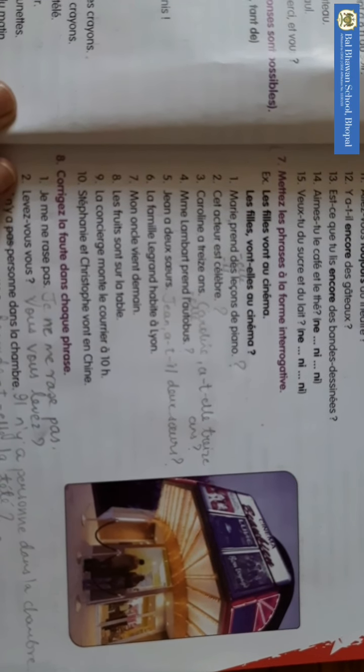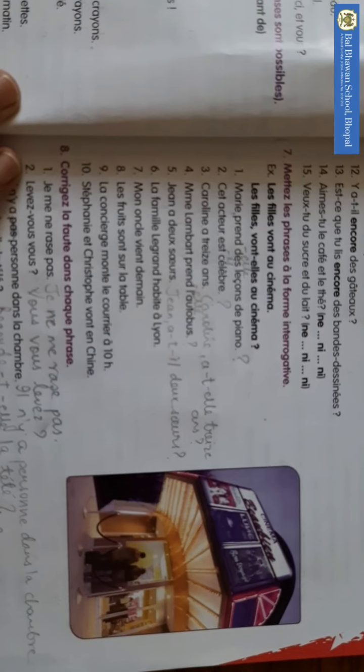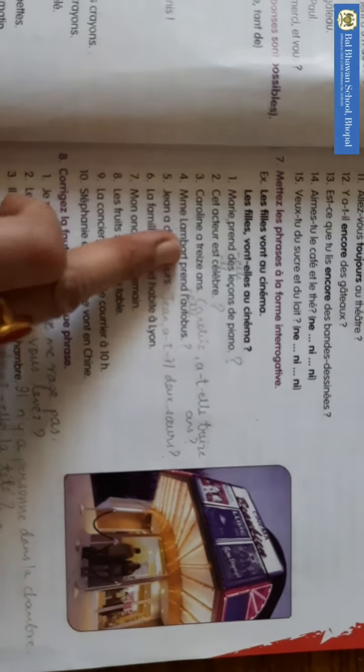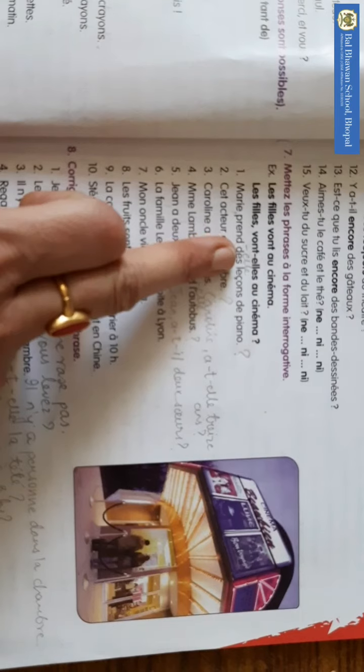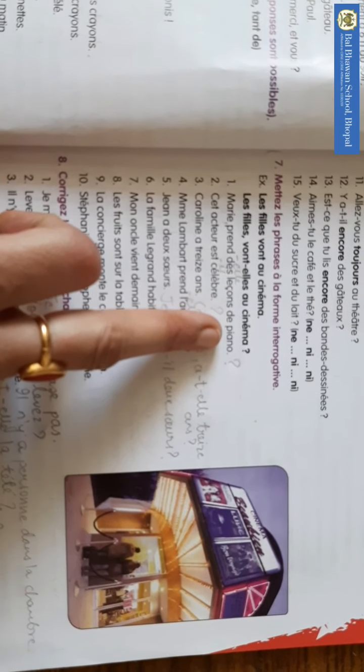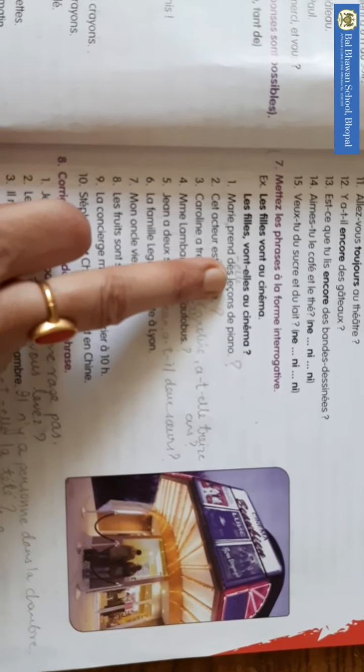Mari, prawn, de, leso, de, pano. So what will you write? Mari, prawn, el, de, leso, de, pano. We have to write the pronoun here.